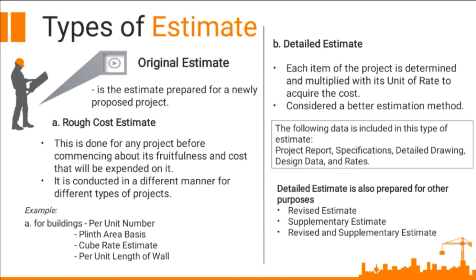Detailed estimate is also prepared for other purposes. Number 1, the revised estimate: it is prepared if changes are made in the project design of the already prepared estimate, or if there are changes due to fluctuation of prices. It is accompanied with comparative statements that clarify the price fluctuation in each item. Number 2, the supplementary estimate: if construction is started and changes in design are felt, and expenditure cannot be covered with approved funds, then an additional estimate is prepared, which is called a supplementary estimate.